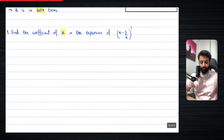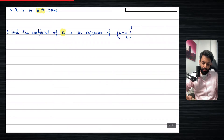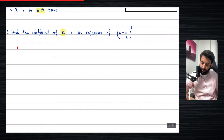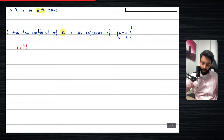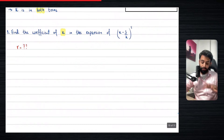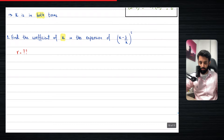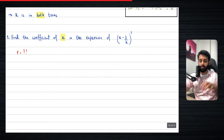The question here says: find the coefficient of x — that means x to the power 1 — in the expansion of (x − 3/x) to the power 5. The idea is the same: we find the value of r, which we then use to find the coefficient. The longer way would be to expand the entire expression and pick out the coefficient, but obviously we don't want to do that.